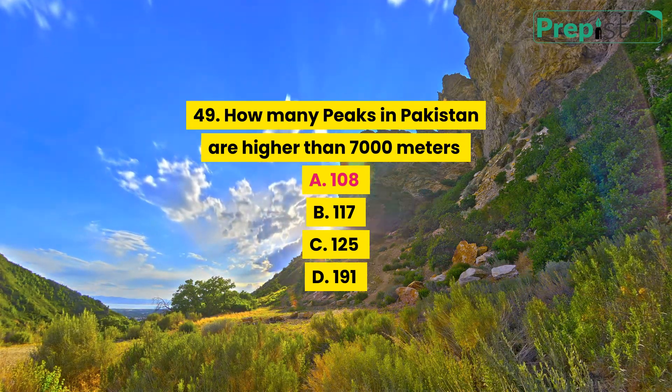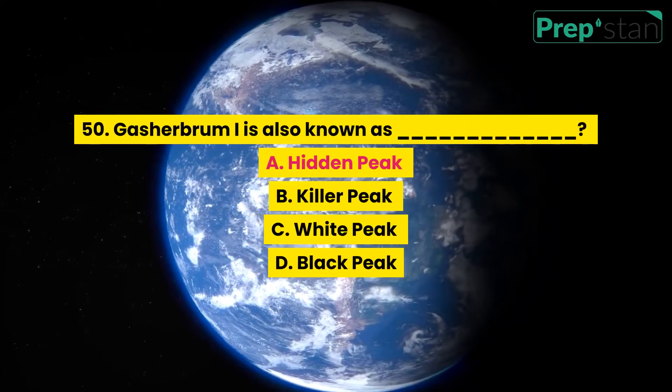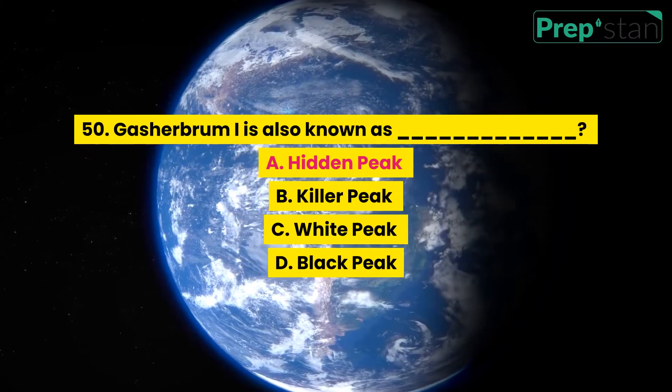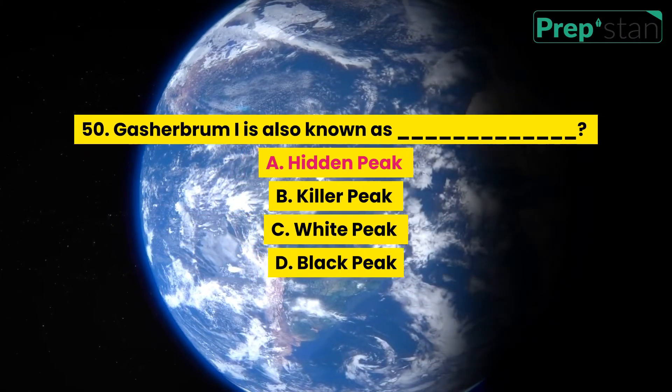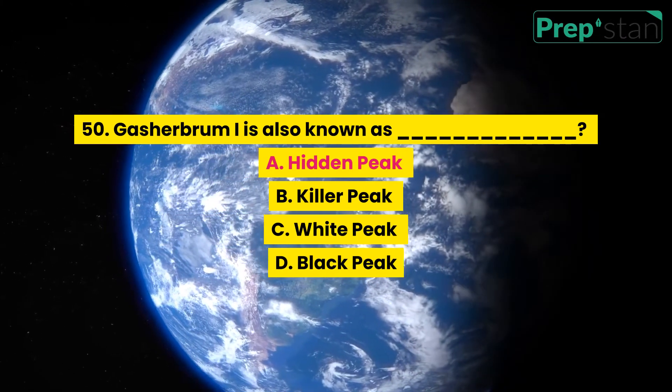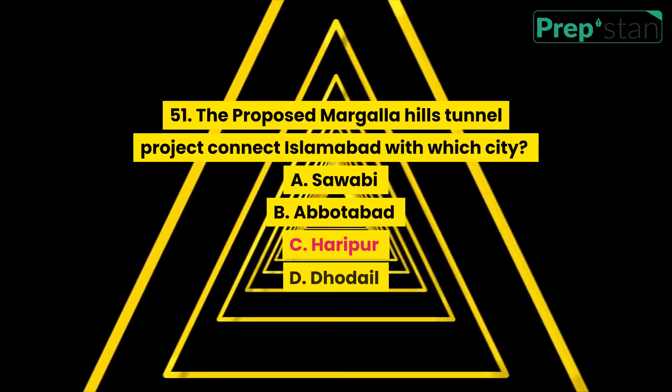Question 50: Gasherbrum I is also known as blank. A. Hidden Peak, B. Killer Peak, C. White Peak, D. Black Peak.